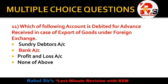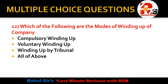Question 11 — which of the following are the modes of winding up of a company? This is from the liquidation chapter. The options are compulsory winding up, voluntary winding up, winding up by tribunal, and all of the above. All three are valid modes of winding up, so the correct answer is all of the above.